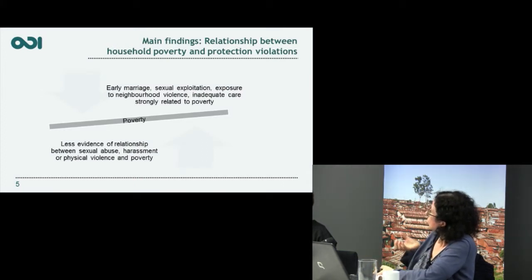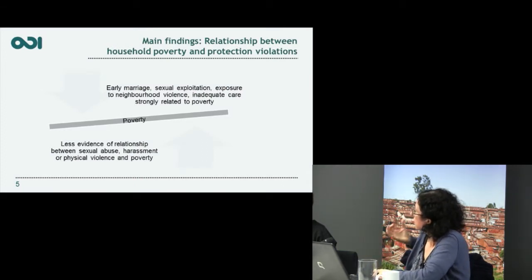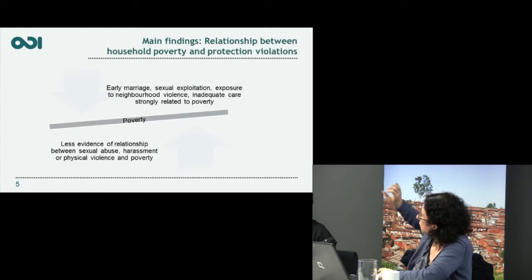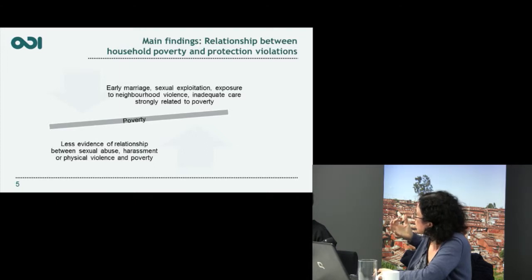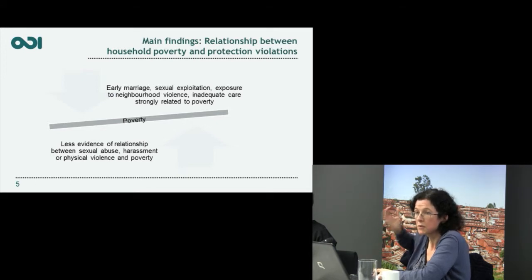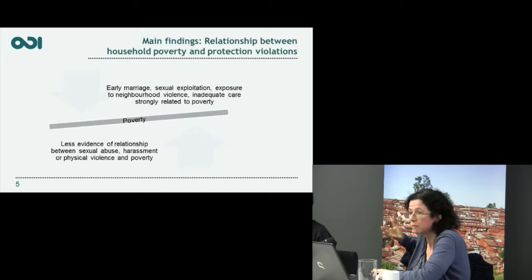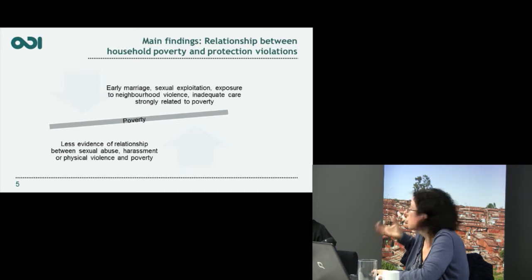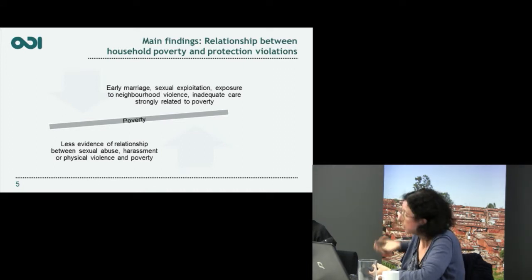What did we find about the relationship between household poverty and protection violations? We found a stronger relationship with household poverty for early marriage, sexual exploitation, exposure to neighbourhood violence, and inadequate care. But for some things there is much less clear evidence of a relationship — the evidence is mixed and inconclusive. Some studies do find a relationship between physical violence against children and household poverty, but a lot don't. The same is true with sexual abuse.